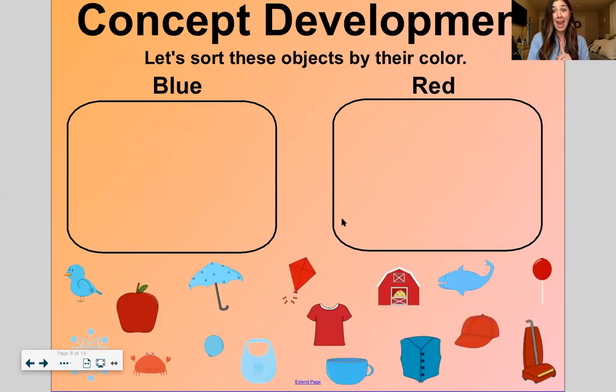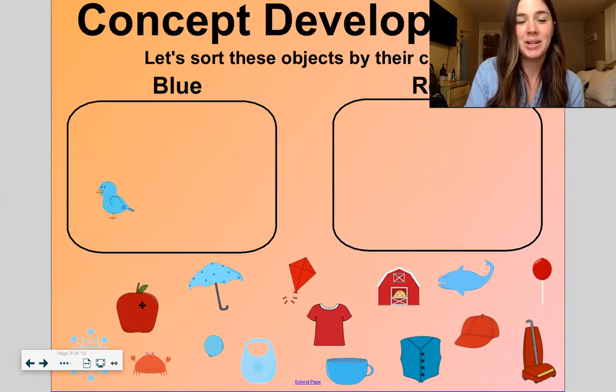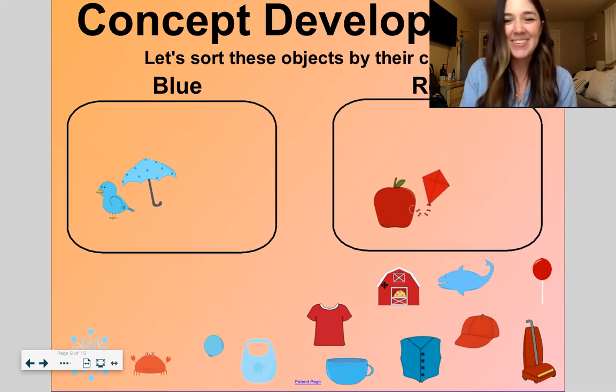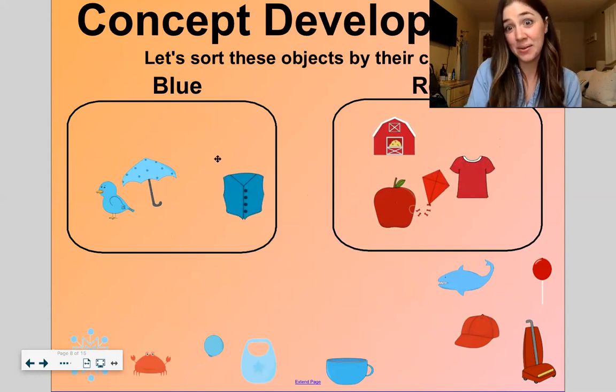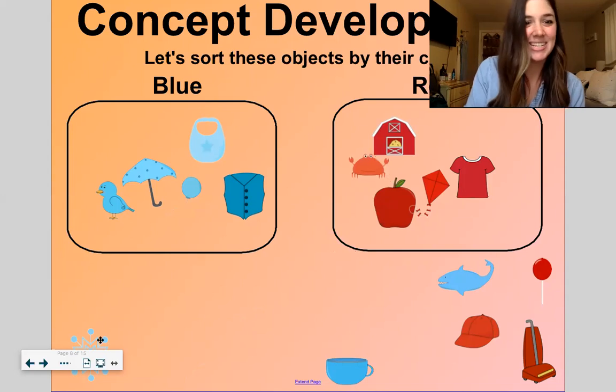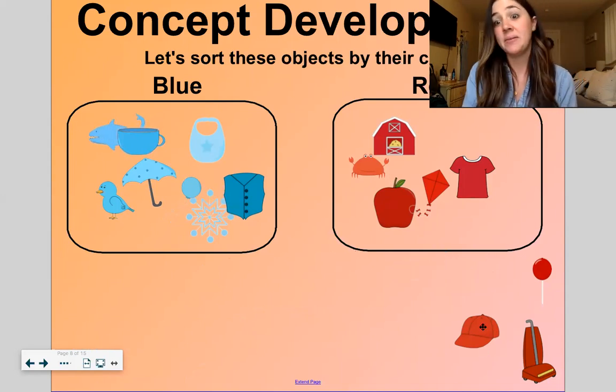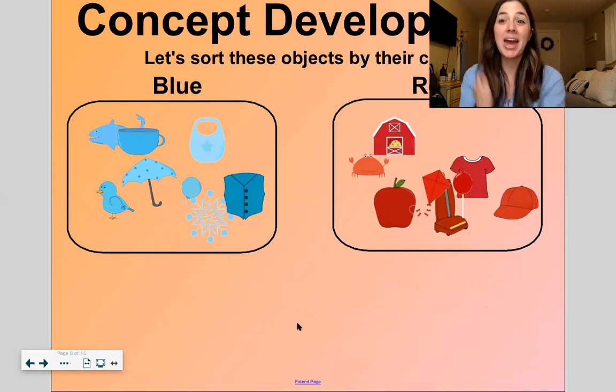Now our categories are different. They're not big and small. They're blue and red. Blue. Red. So help me. Ready? Blurt. Blue. Blurt. Red. Blurt. Blue. Blurt. Red. You can just shout it out. Blue. Blue. Blue. Blue. Red. Blue. Blue. Blue. Red. Red. Red. Red. We sorted them into two categories. Blue and red.